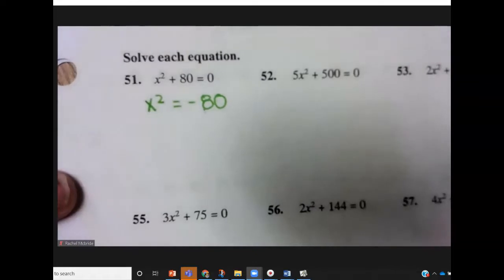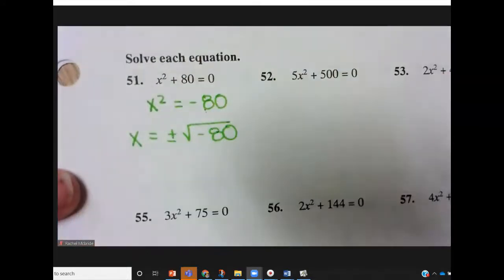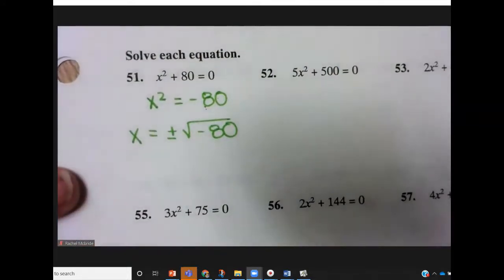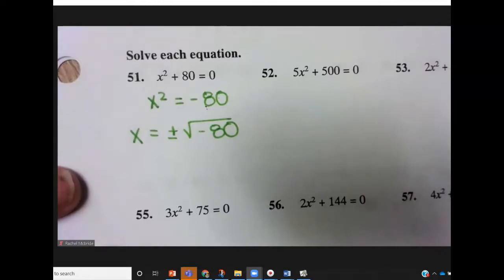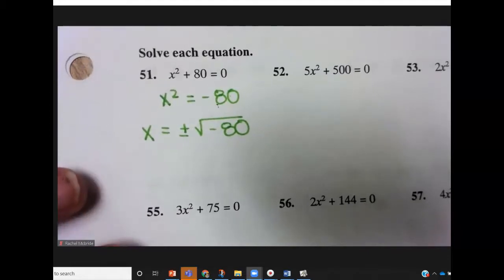So what you do is isolate the squared. And then take the square root of both sides. Anytime we take a square root, we add the plus or minus in front. Because taking the square root of something squared guarantees two answers.